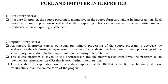An impure interpreter carries out some preliminary processing of the source program to decrease analysis overhead during interpretation. To reduce the analysis overhead, some initial processing of the source program is done by the impure interpreter. The source program is given to the preprocessor, which converts it into an intermediate representation. This intermediate representation is then used during interpretation, speeding up the interpretation by allowing the intermediate representation to be analyzed more efficiently than the source program.